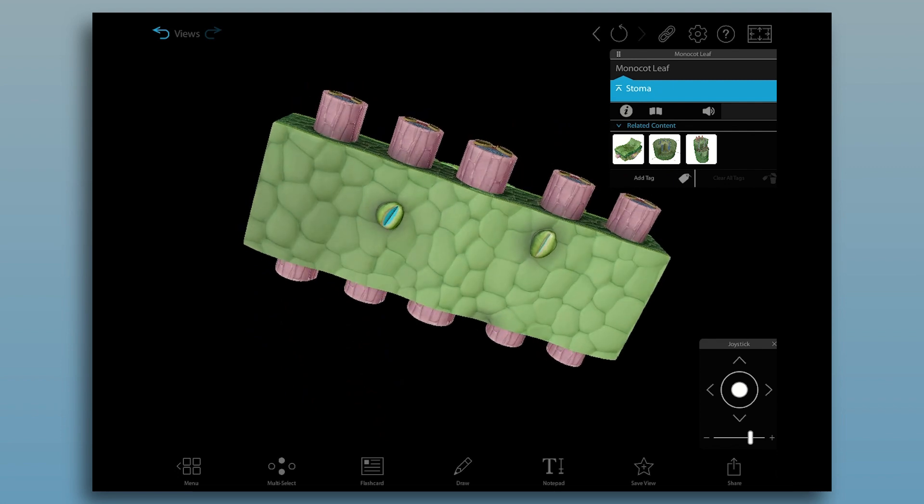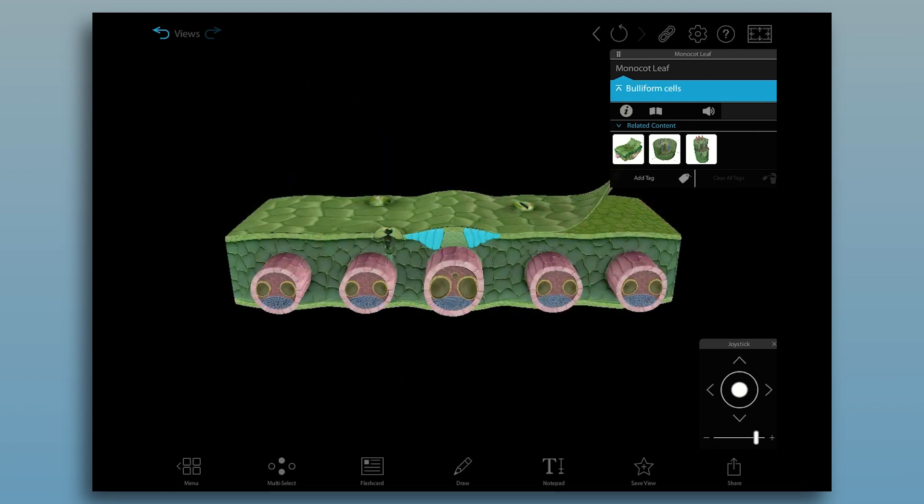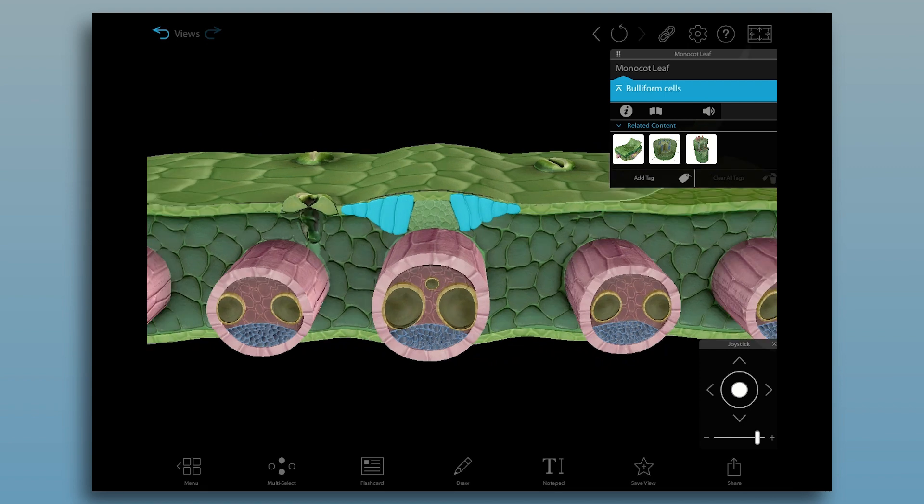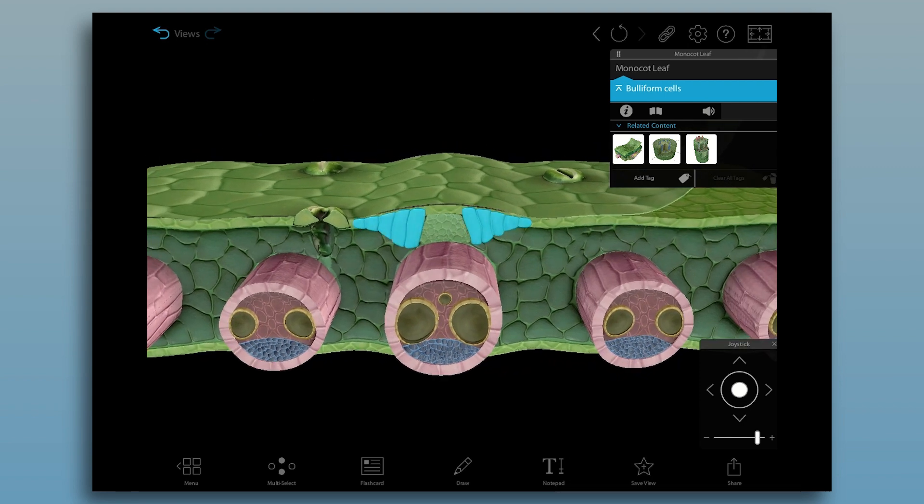Most monocot leaves also contain bulliform cells, which cause the leaf to open when they absorb water. In dry conditions, they cause the leaf to curl up to prevent water loss.